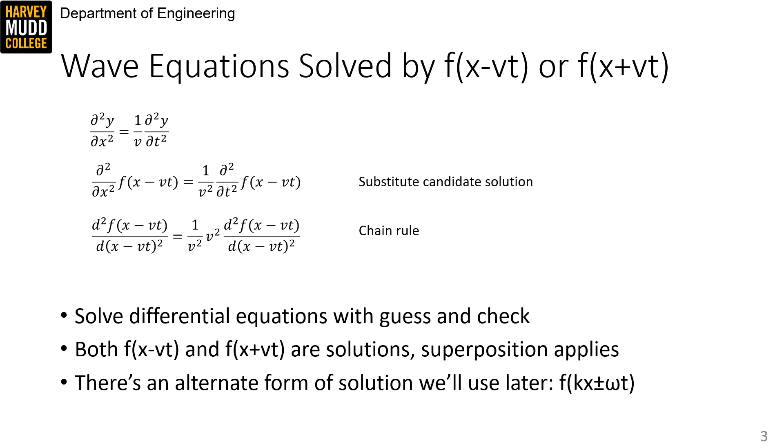And just as an aside, there's an alternate form of this candidate solution which we'll use later. That's f of kx plus or minus omega t, where k is called the wave number and is defined as omega over v.